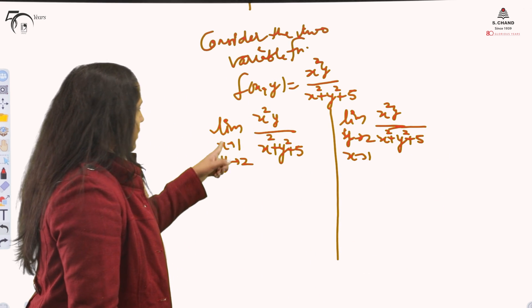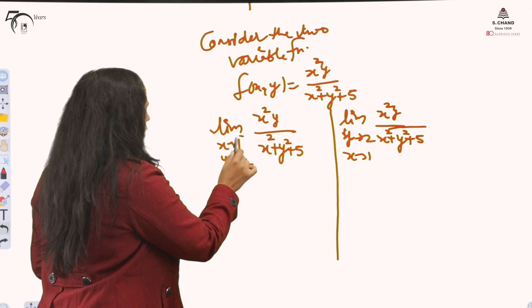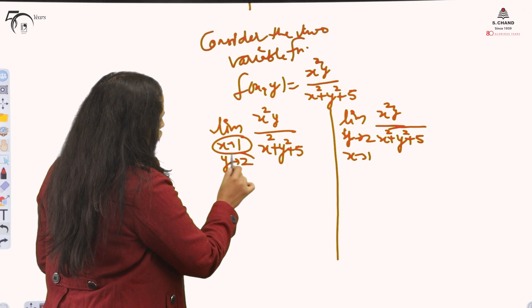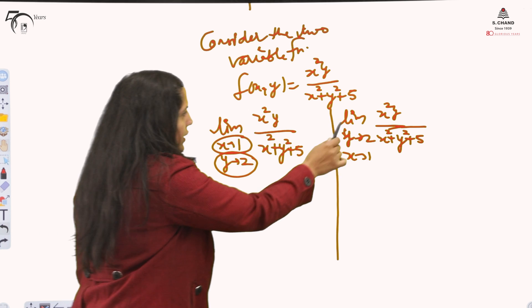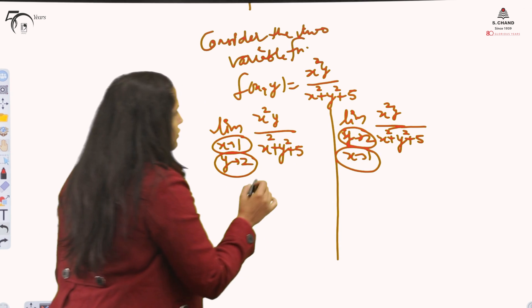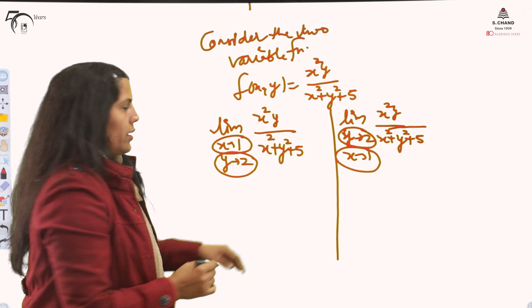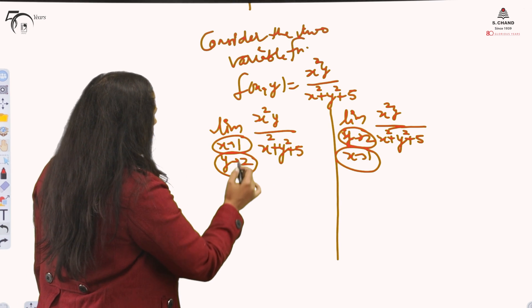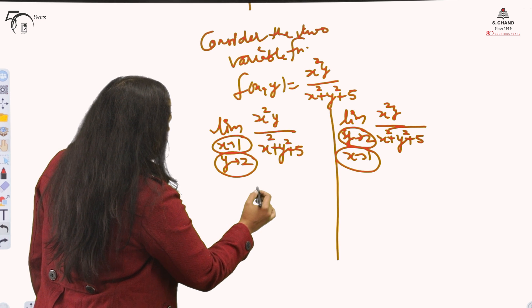You can see how I have written the two values. What you will do? If I am writing it this way, first you will substitute x=1. Then you will substitute y=2. And if I am writing it this way, first y=2 and x=1. And just check both the values should be same. If it is so, then you will say that the limit exists.